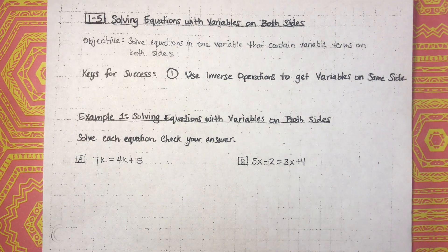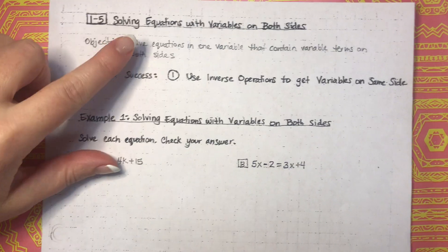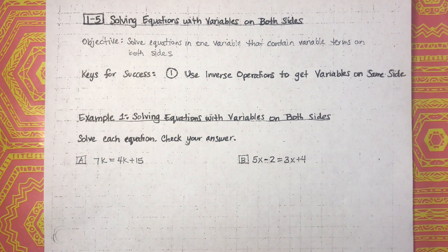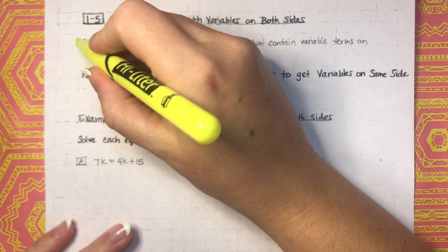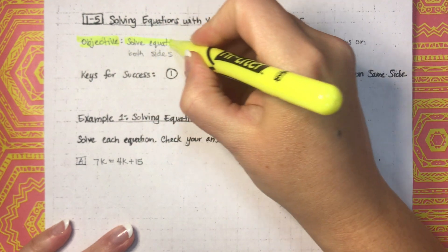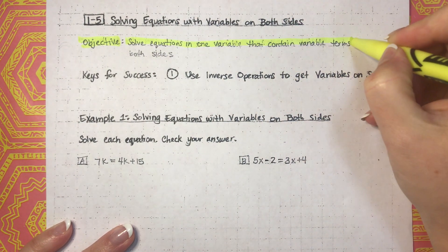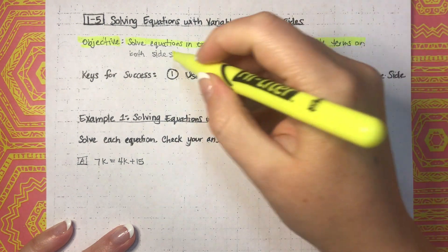Hello and welcome back. Today we are discussing Chapter 1, Lesson 5: Solving Equations with Variables on Both Sides. The objective for today is to solve equations in one variable that contain variable terms on both sides of the equation.